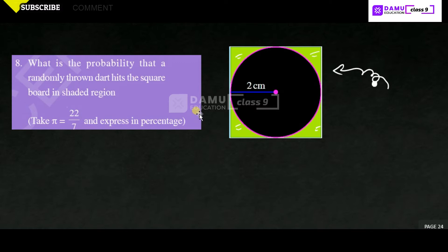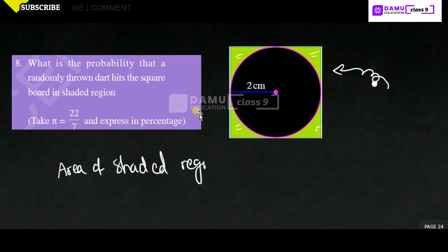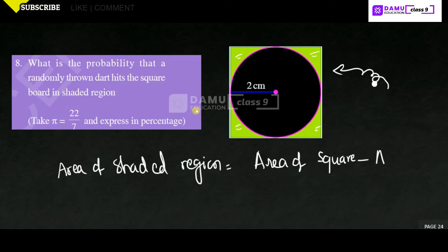So, if you want to touch this shaded region, we have to find the area of the shaded region. The shaded region will be equal to the area of square minus the area of circle. Let's take this dot thrown from here — you need to touch this. So, area of shaded region will be equal to area of square minus area of circle.